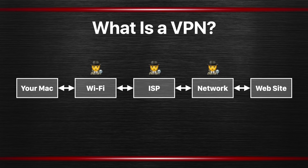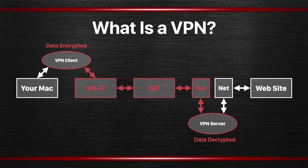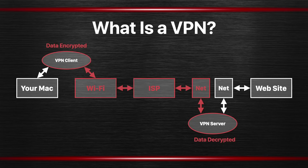A VPN will help you solve this problem. If you install a VPN on your Mac and turn it on, the entire picture changes. A VPN client — software running on your Mac — will encrypt all the data as it leaves your Mac before it goes to the WiFi network. Everything shown in red is encrypted. If the WiFi network has been compromised, they'll only see scrambled data. They can't tell what you're doing, where you're going, or see any passwords — it's all encrypted through the WiFi network, through the ISP, and most of the way through the internet until it reaches the VPN server.